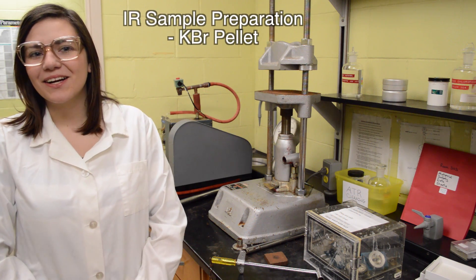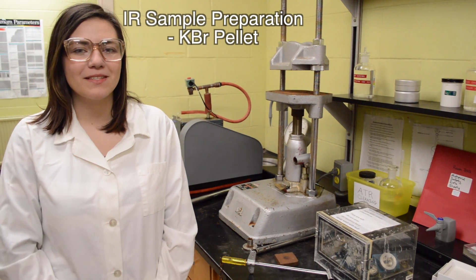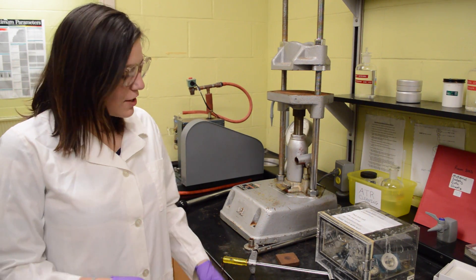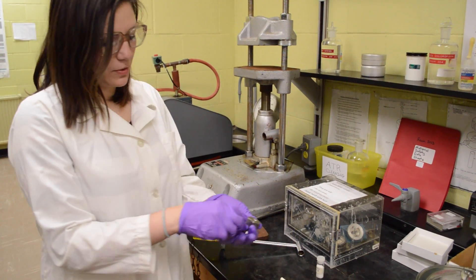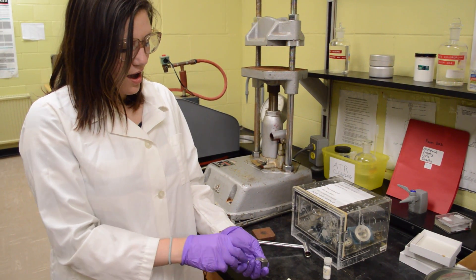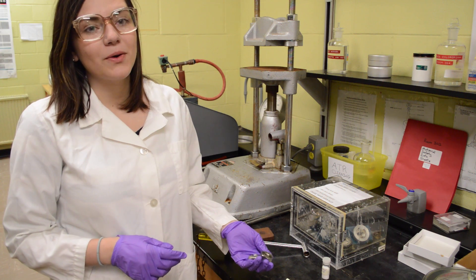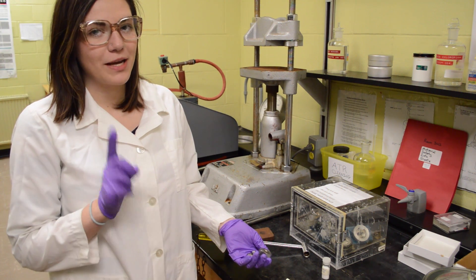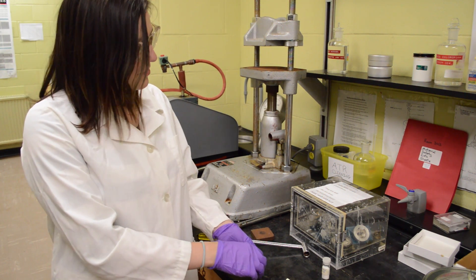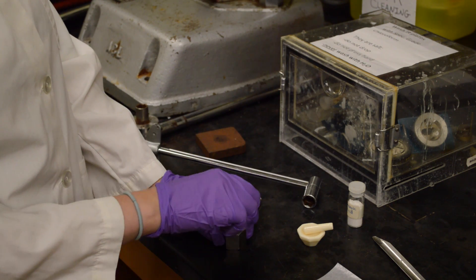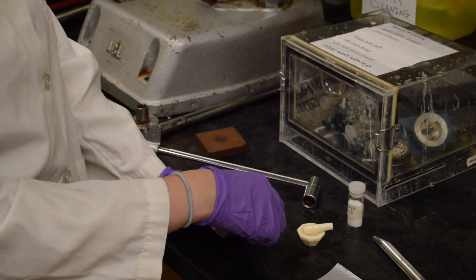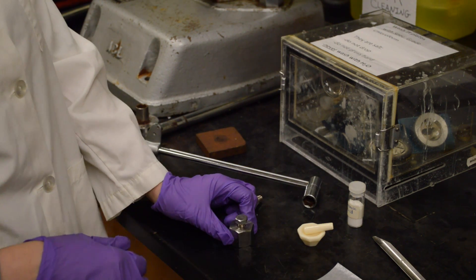Today we're going to learn how to make the KBR wafers for a different type of IR analysis. First of all you're going to get this bolt, and this bolt, and barrel. They're going to be really hot because you're going to get them out of the drying oven, so make sure that you are very careful when you handle them. The first thing you want to do is insert one bolt into the barrel until two threads are visible above the barrel, like so.